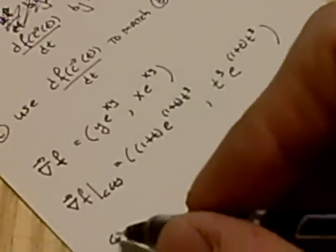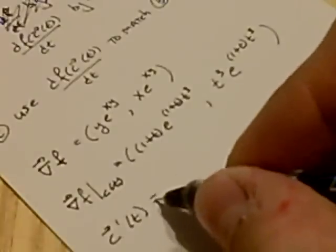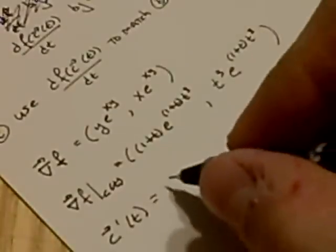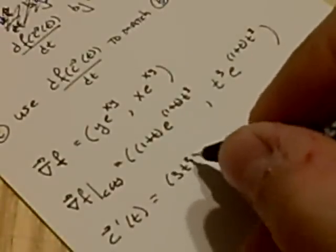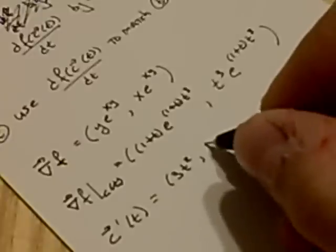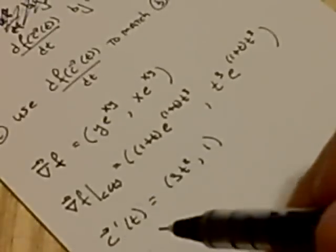Now we also need the tangent to the curve. So that's not bad. That's just 3t squared, comma, 1. So now we have the gradient and the tangent.